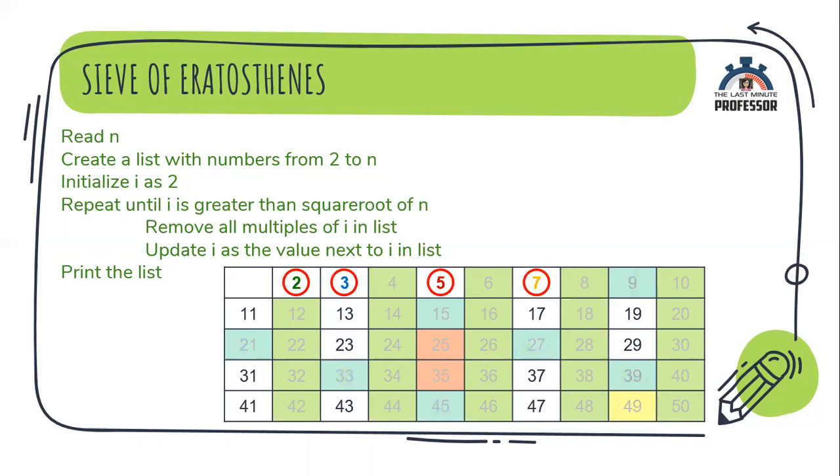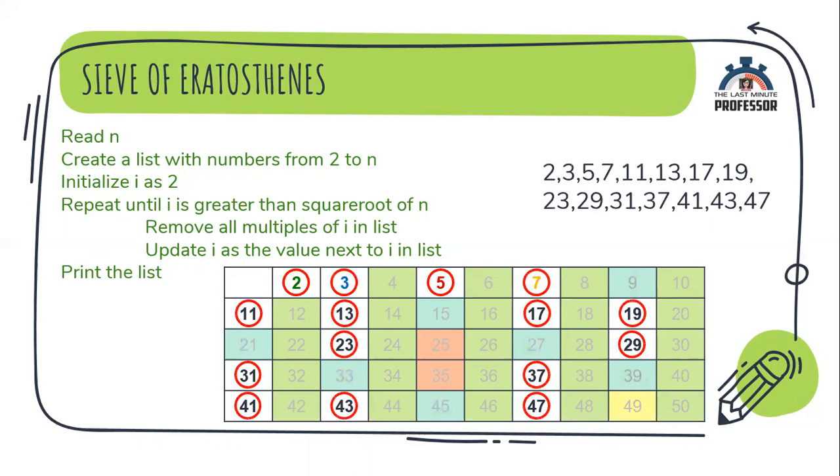Now, the condition fails. So, print the list, that is, the remaining elements in the list, which is nothing but the set of prime numbers.